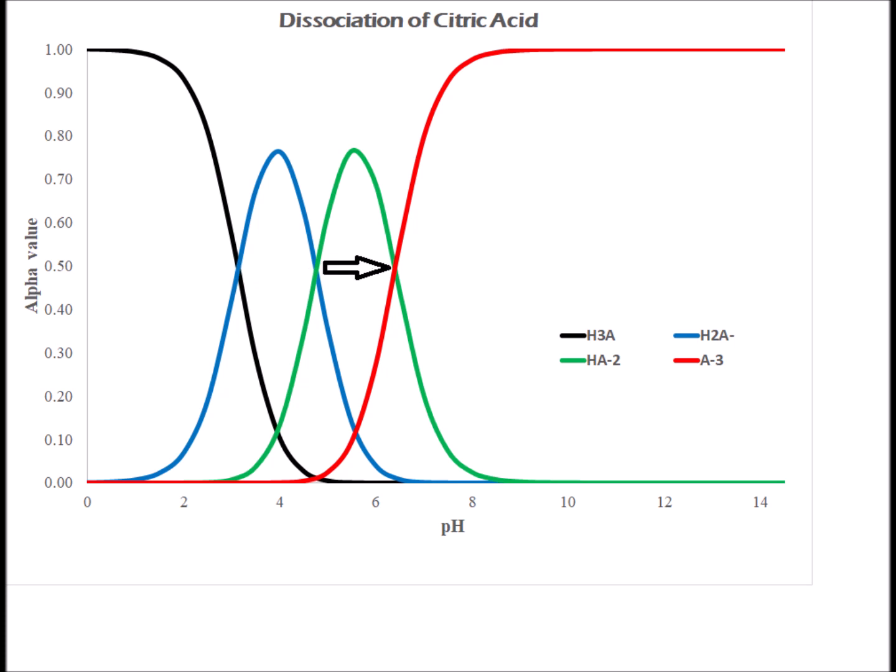At high pH, the trianion shown in red is the most abundant species. It crosses over the dianion form, shown in green, at a pH roughly around 6.4 — that is the pKa of Ka3 for citric acid.